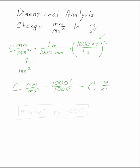To change from millimeters per millisecond squared to meters per second squared, multiply by 1,000.